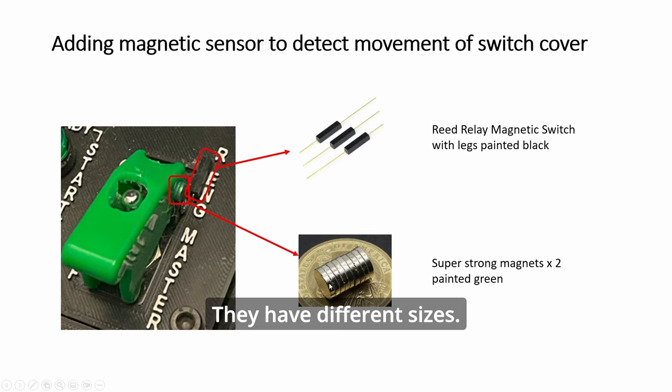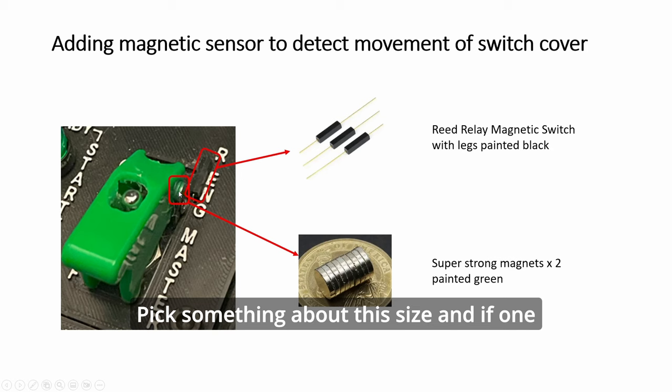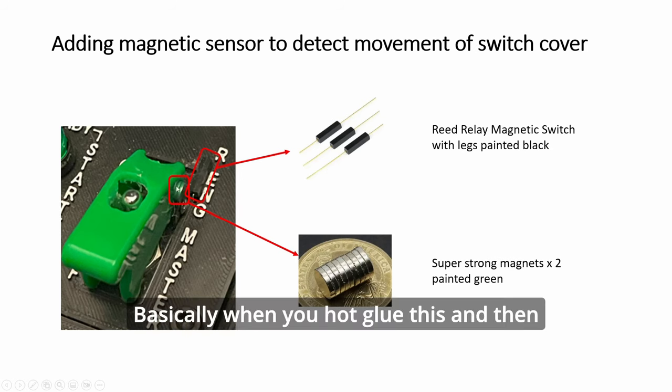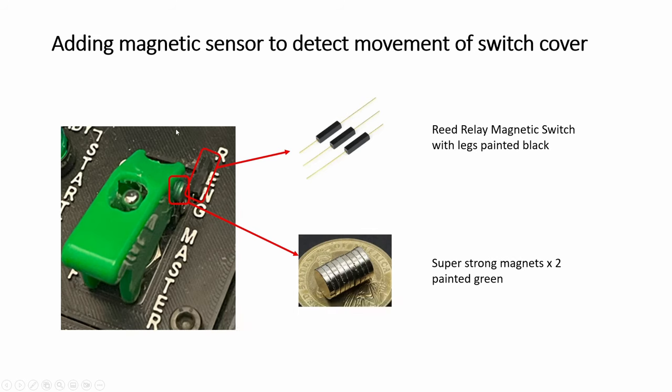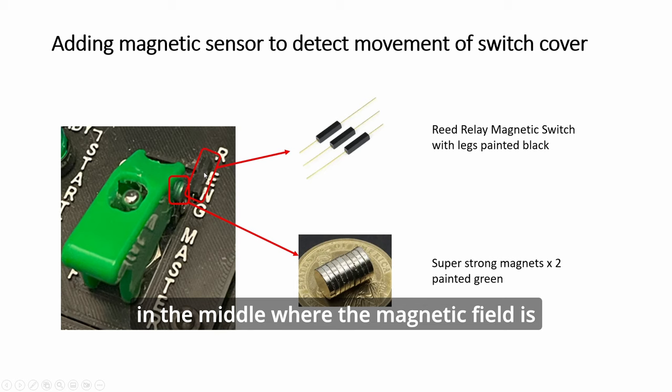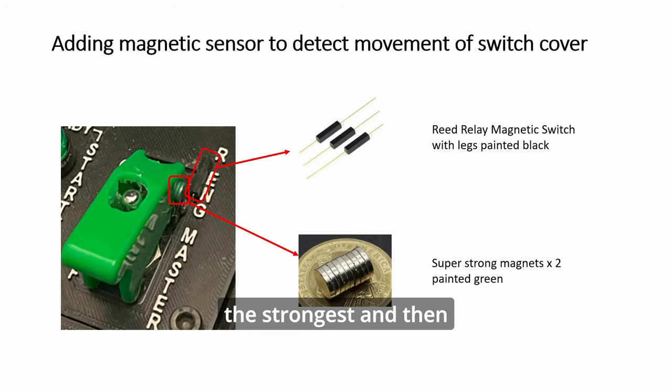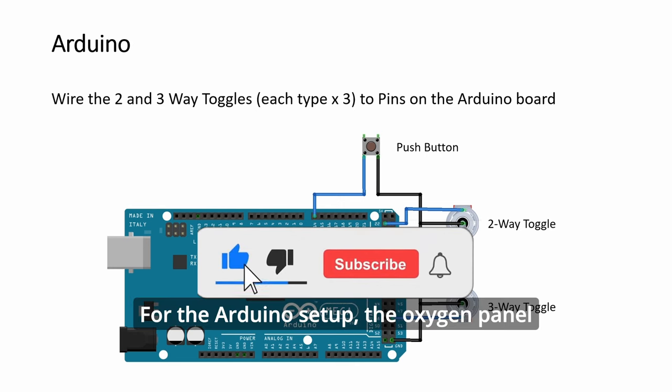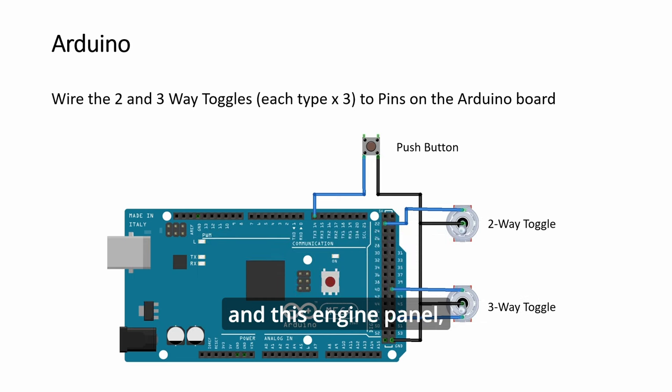Basically an on-off like a push button switch and then have the strong magnets here. They have different sizes. Pick something of about this size and if one is not strong enough, you need two. Okay, basically, when you glue this and then when you push it up, it will land somewhere in the middle where the magnetic field is the strongest and then basically that is like pushing a button.